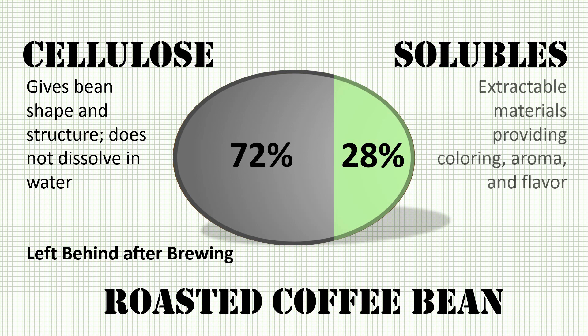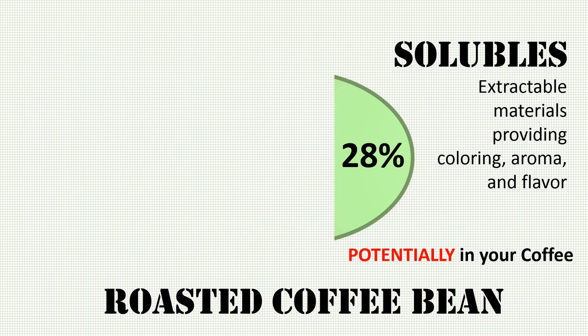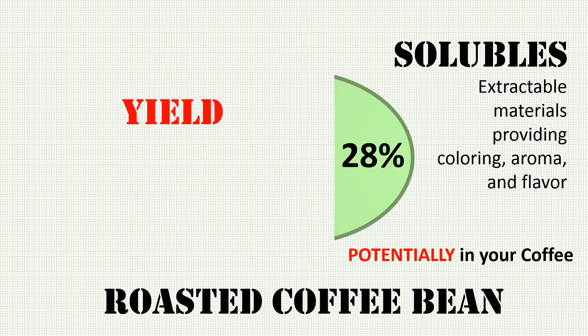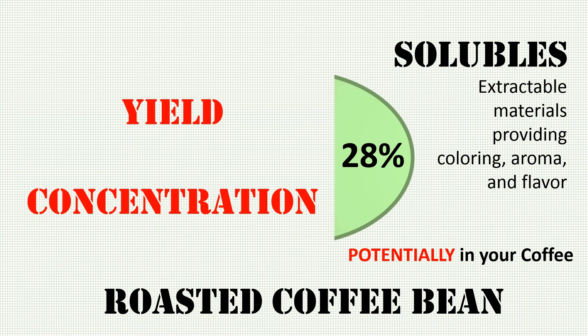Solubles, on the other hand, are the extractable materials providing coloring, aroma, and flavor. These are the materials that are potentially in your coffee. This leads into two key terms we'll be discussing today: solubles yield and solubles concentration.